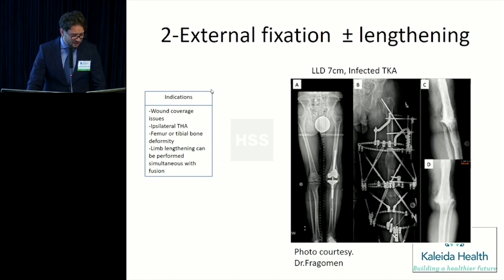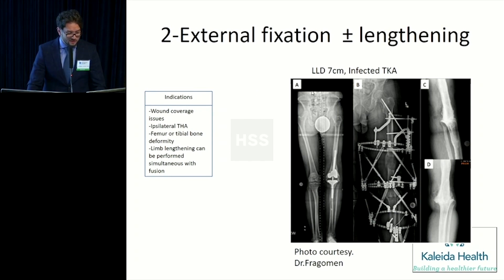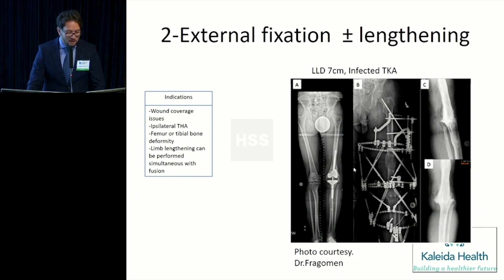The second strategy is placing a frame with or without lengthening. In this patient with an LLD of 7 centimeters — which cannot be accepted — and wound coverage issues, a double frame can achieve fusion while simultaneously lengthening above the fusion site.